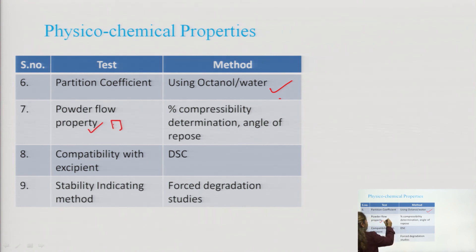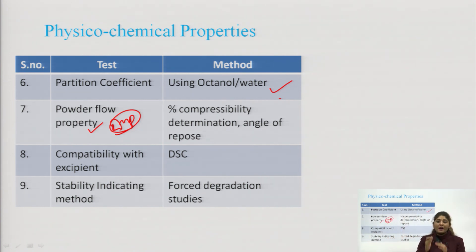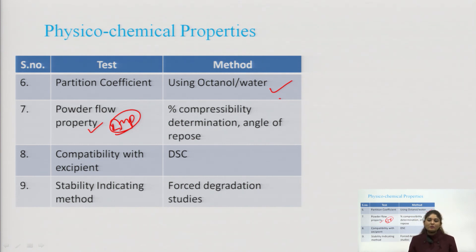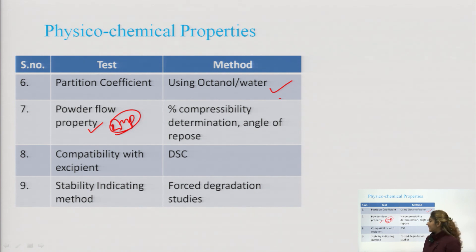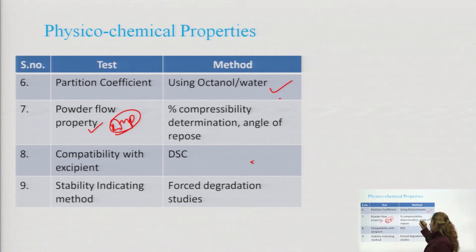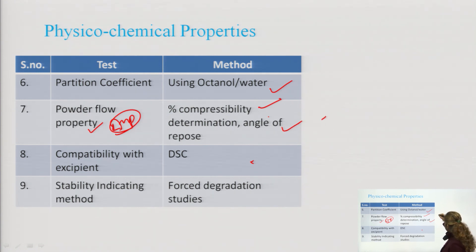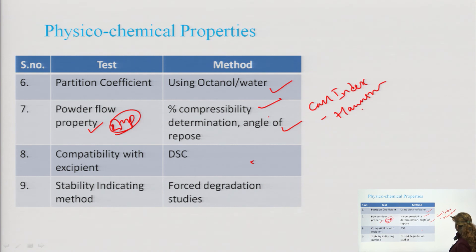Powder flow property is a very important pre-formulation parameter. It tells us whether our powder is flowable or not. In tablet and granule formulations, flow property plays a major role because the particle must flow through die cavities during punching — poor flow leads to non-uniform tablets. Flow property is determined by measuring compressibility, angle of repose, Carr's index, and Hausner's ratio.